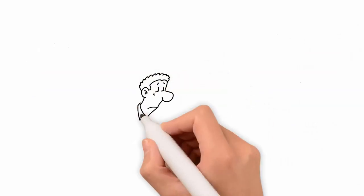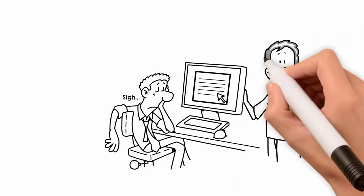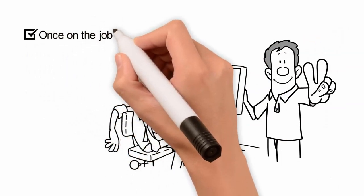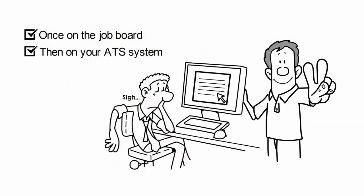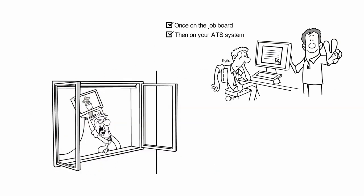Traditional applicant tracking systems force candidates to fill their job application form twice, once on the board where the job was published and then on your ATS system. This is not a pleasant experience for the candidate and as a result application drop rate creeps up.